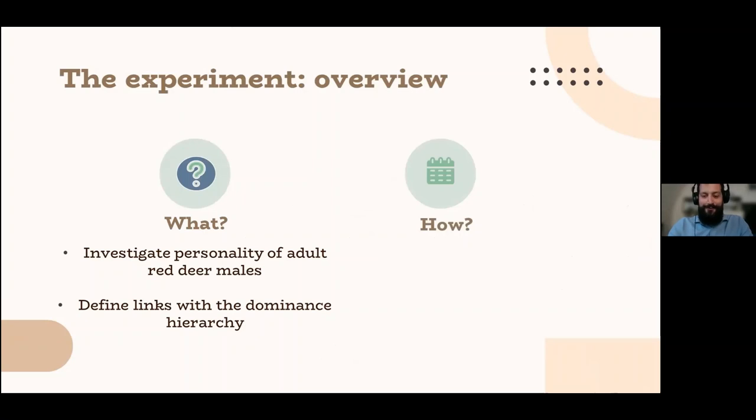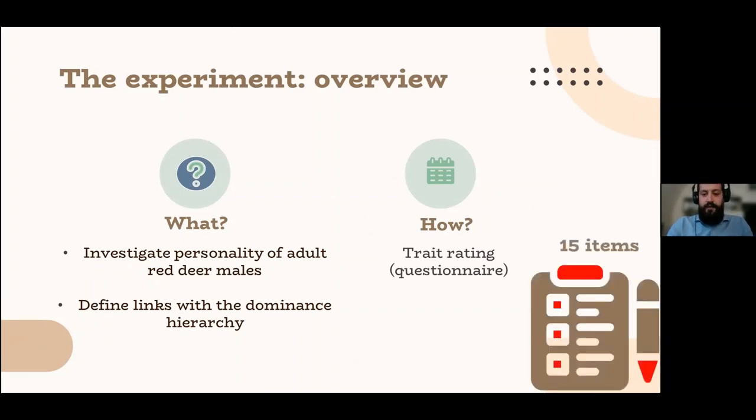How did we want to do that? Well, there are several ways to define or try to describe personality. We decided to adopt the trait rating, so basically the questionnaire, but of course there was no questionnaire for the red deer. So we had to come up with a questionnaire, adapting previously used questionnaires for primates, horses, fallow deer and elephants, and our questionnaire was composed of 15 items that we considered to be representative for the red deer.